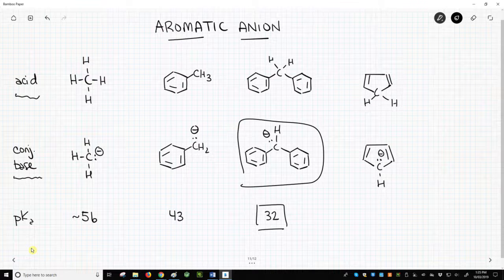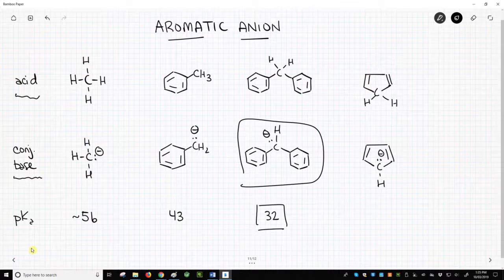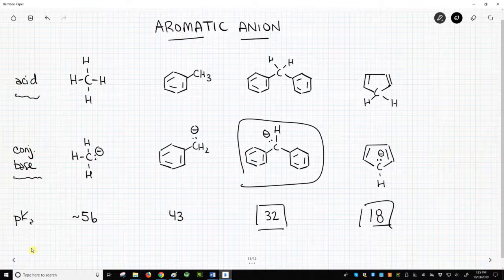Now let's look at this last carbon acid, cyclopentadiene. The pKa of cyclopentadiene is an amazing 18. It's almost the same as water. How can cyclopentadiene be so acidic compared to the other carbon acids? It has to do with aromaticity.